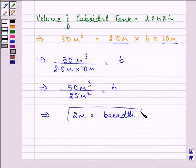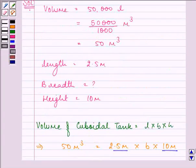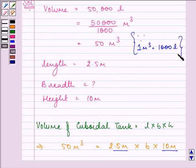So this is the required answer. Hope you enjoyed and understood the concept. You need to convert the volume given in litres to cubic meters by knowing that 1 cubic meter equals 1000 litres. This relationship helped us find the solution. Hope you enjoyed and have a good day.